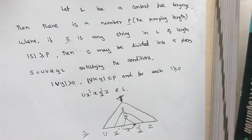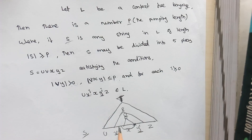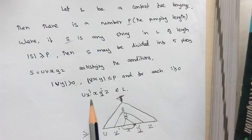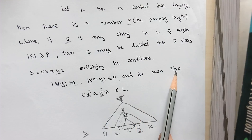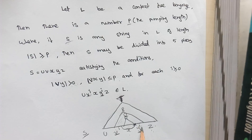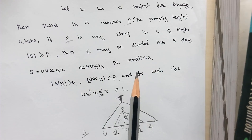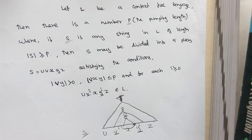Whenever there is a looping condition, the loop repeats 0 or more times. In the middle portion of V and Y, we make a repetition where X remains as it is, and U and Z also remain as they are. Since it is a looping condition, for all i greater than or equal to 0, U V^i X Y^i Z should also belong to the given context-free language. That is the definition and explanation of the pumping lemma for context-free language, and we use this pumping lemma to prove that some language is not context-free.